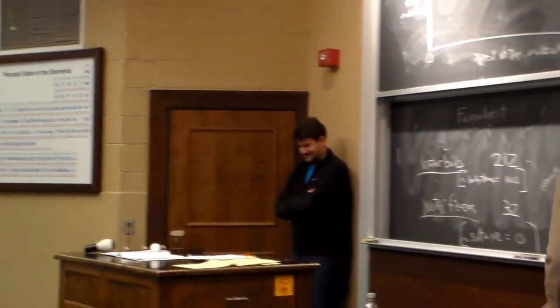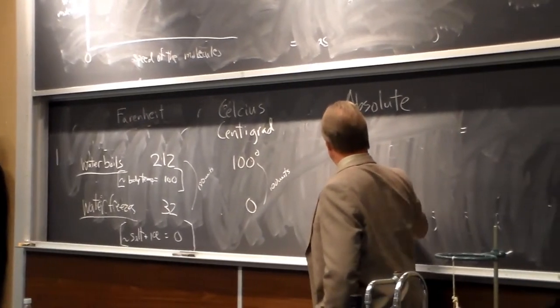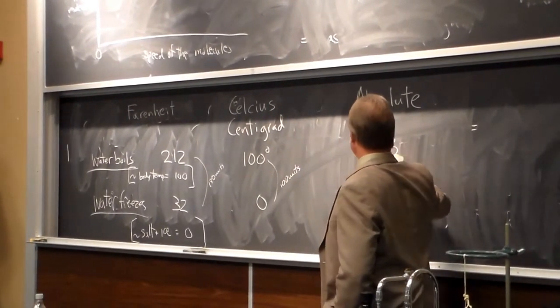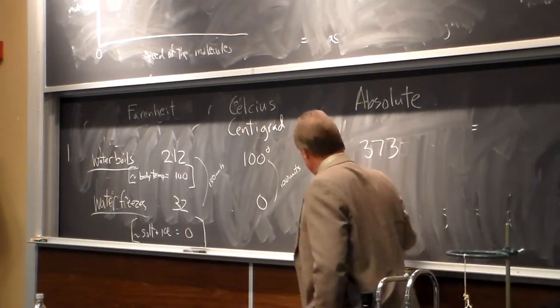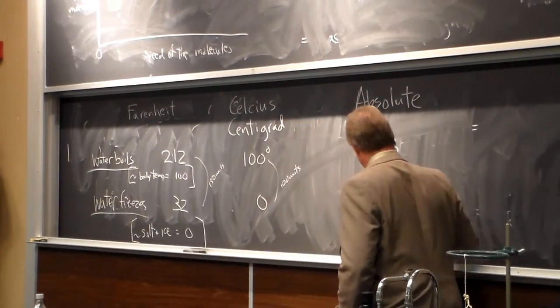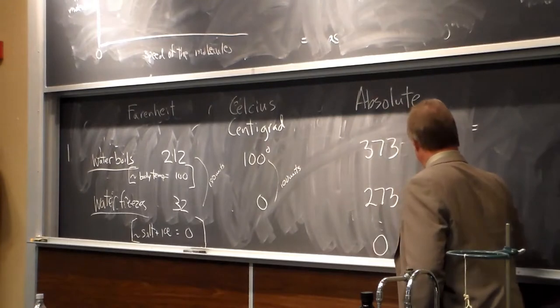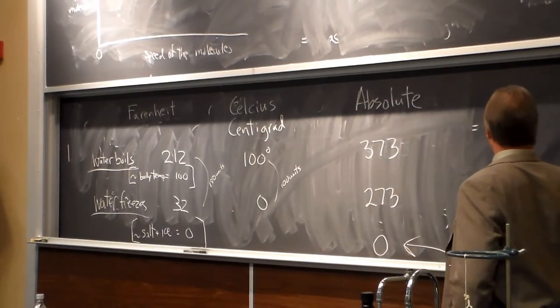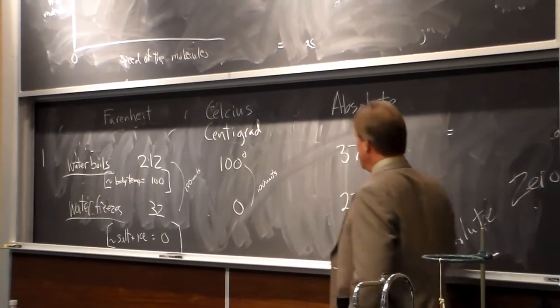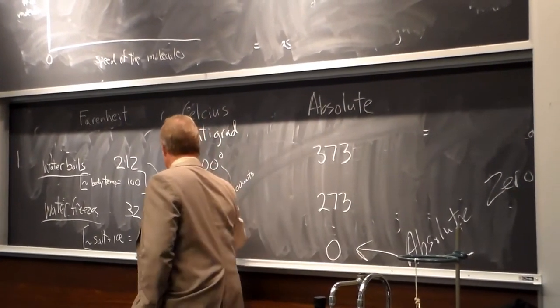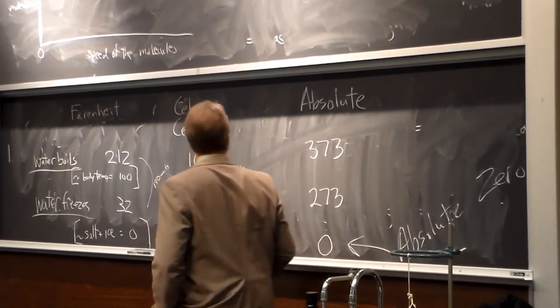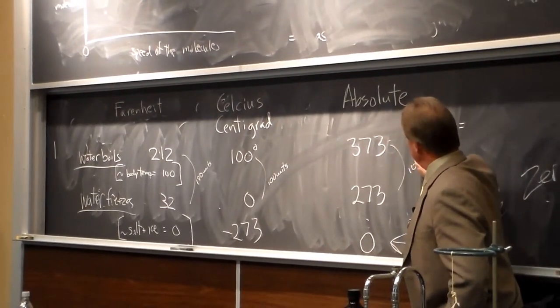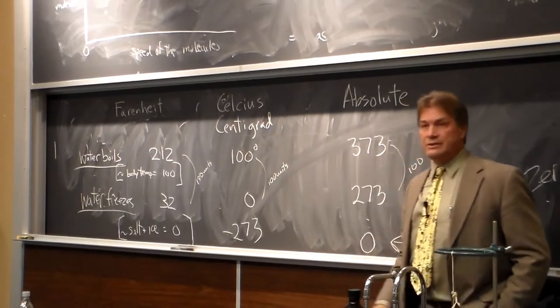Absolute zero, this number is 273 and this is 373. And that's because absolute zero is here, where all molecular motion stops, and that's minus 273. So the absolute scale, this is still 100 units, is the same size as the Celsius degree. They just offset it such that zero is where there is no molecular motion.